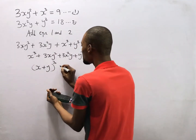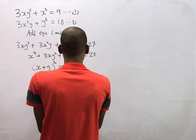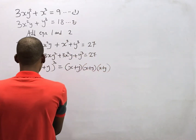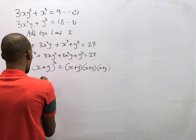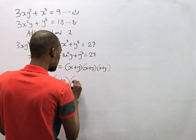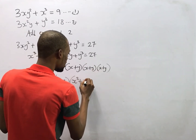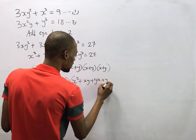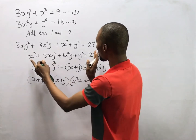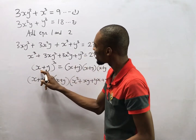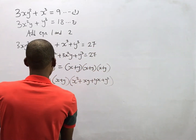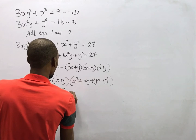(s + y)³ is the same thing as (s + y)(s + y)(s + y). Expanding this, you get s² + sy + sy + y² and then multiplying through, we arrive at 3sy² + 3s²y + s³ + y³. So everything here is the same thing as (s + y)³.